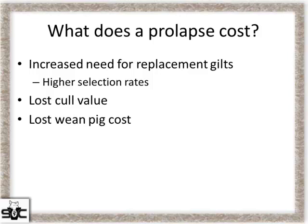Now, what does a prolapse cost on your farm? This was done by our intern Taylor Holman, a student at the University of Minnesota, based on previous work from Brad and Brunner. The three big categories are: you have to replace that animal with a gilt, bumping up your selection rate; you lose the cull value because most prolapses end up dying; and you lose wean pig cost. The highest risk time frame is five days pre-farrow to five days post-farrow, so you can end up with a lot of these sows in pig at the time of death.